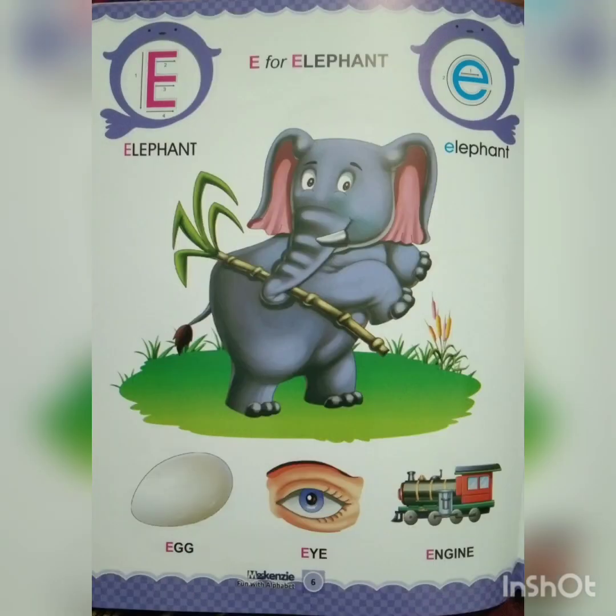E for elephant. Elephant means hathi. E for egg. Eye, engine.